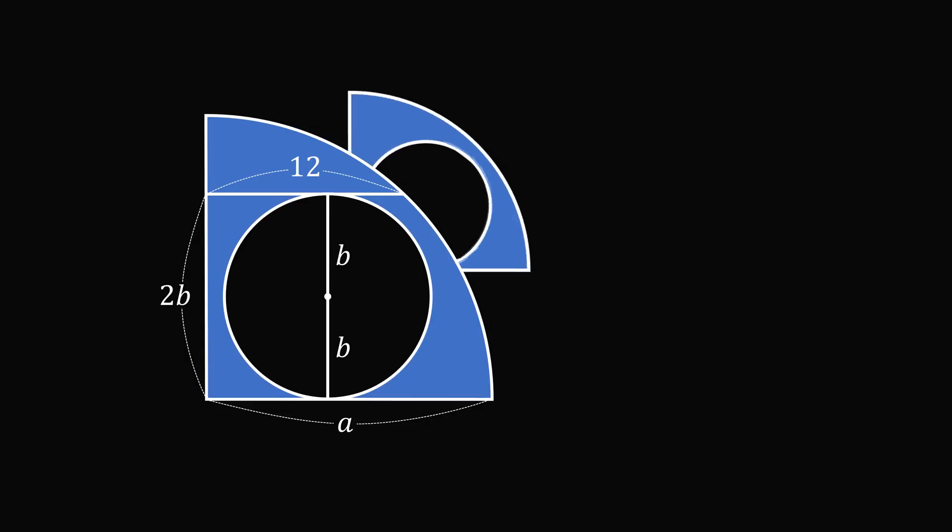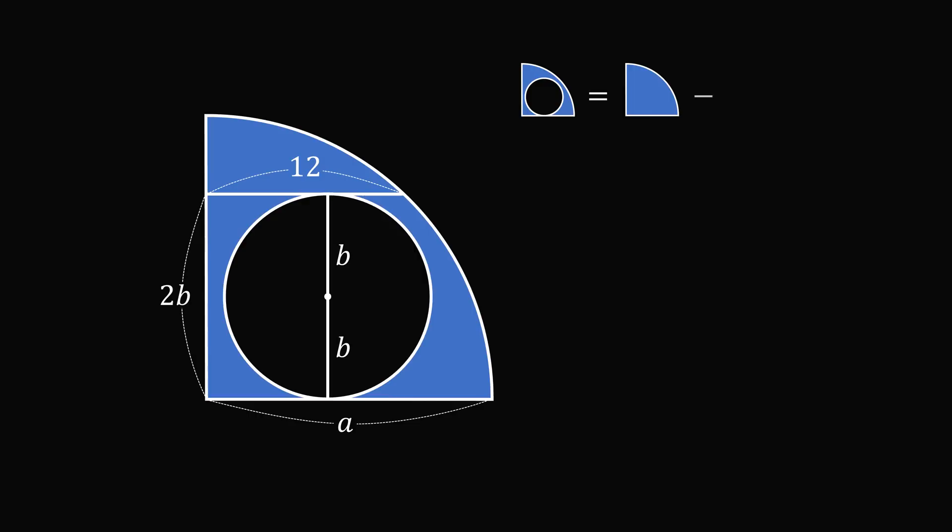We want to calculate the area that's shaded in blue, and that will be equal to the area of the quarter circle minus the area of the small circle. This is equal to πa² over 4 minus πb². Factoring out π gives π multiplied by the quantity a² over 4 minus b².